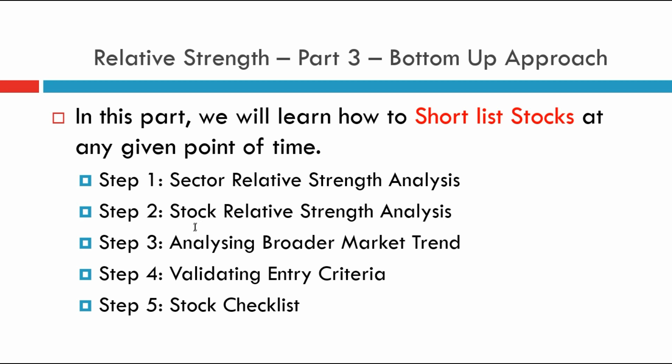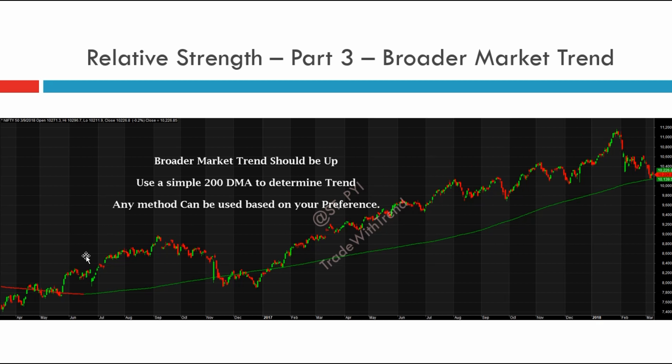This is a bottoms-up approach: we move down to the sector first, then pick out the stock. The top-down approach usually starts from the economy, then the broader market index, then the sector, and then the stock. In the bottoms-up approach you typically start from the company first, but what I've done here is start with the sector first and then move on to the stock.